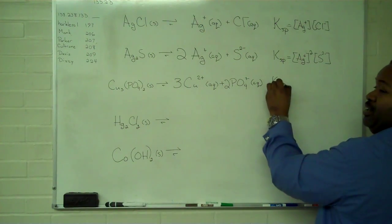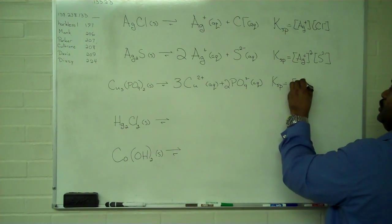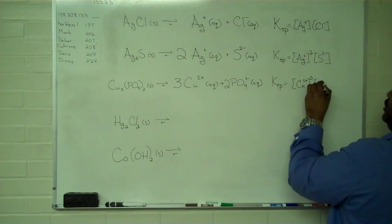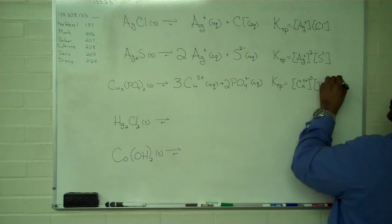And so in this case, our Ksp is copper two plus ion to the third, and our phosphate ion squared.